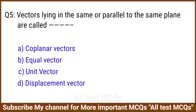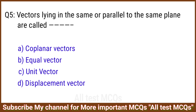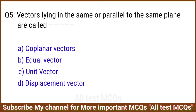Q5. Vectors lying in the same or parallel to the same plane are called? The right answer is option A: Coplanar vectors.